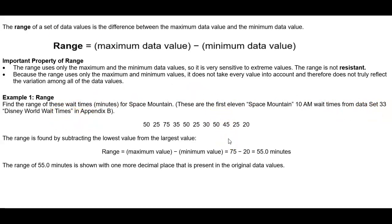So the range is found by subtracting the lowest value from the largest value. So let's find the lowest value. The lowest value, which is the minimum value, is 20, and the largest value is 75. So the maximum value is going to be 75. So to find the range we take 75 minus 20 and we get 55.0 minutes.